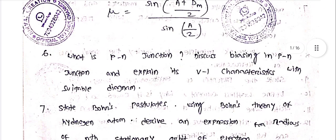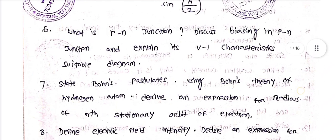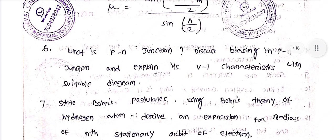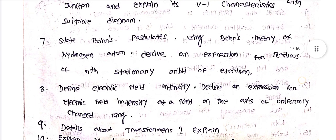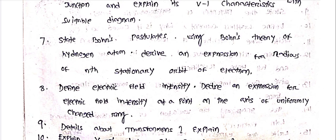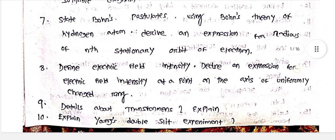What is P-N junction? Discuss biasing in P-N junction and explain its VI characteristics with suitable diagram. Next, state Bohr's postulates using Bohr's theory of hydrogen atom derive an expression for radius of nth stationary orbit of electron.